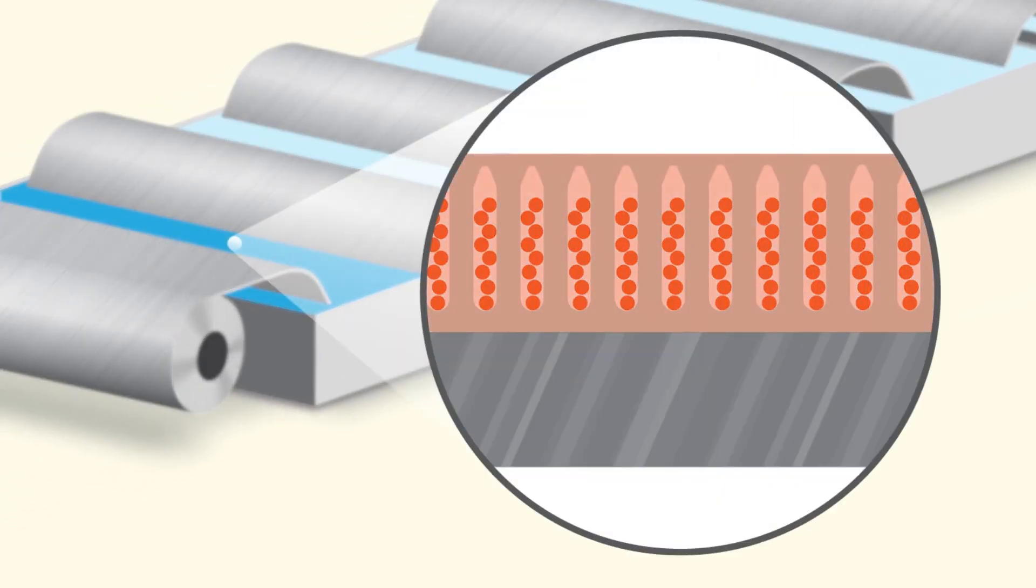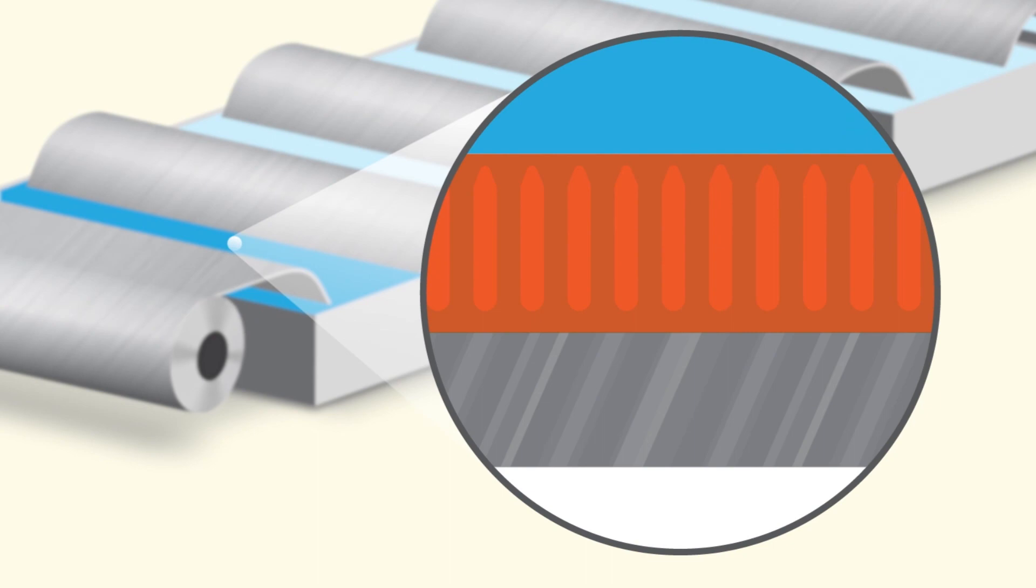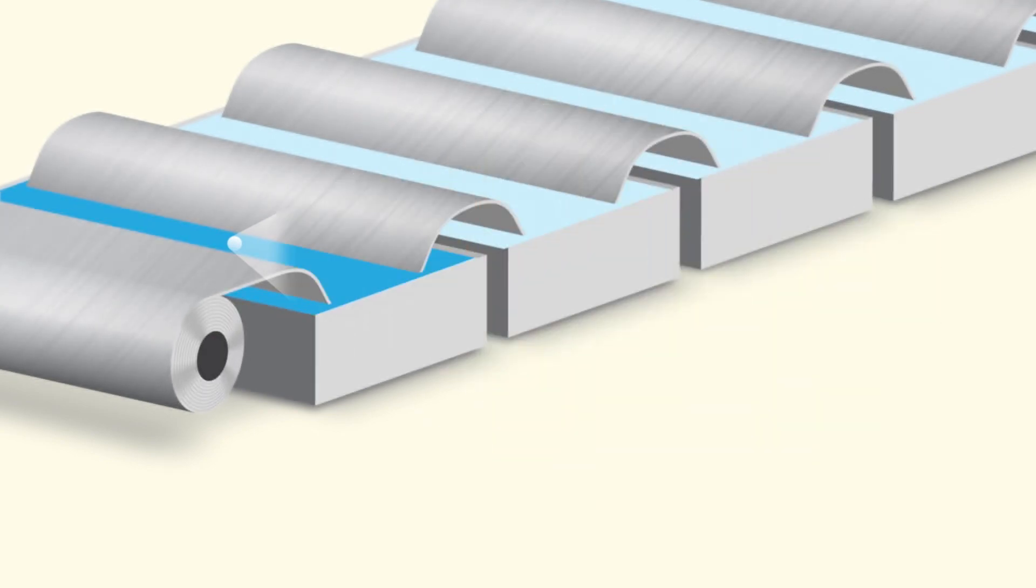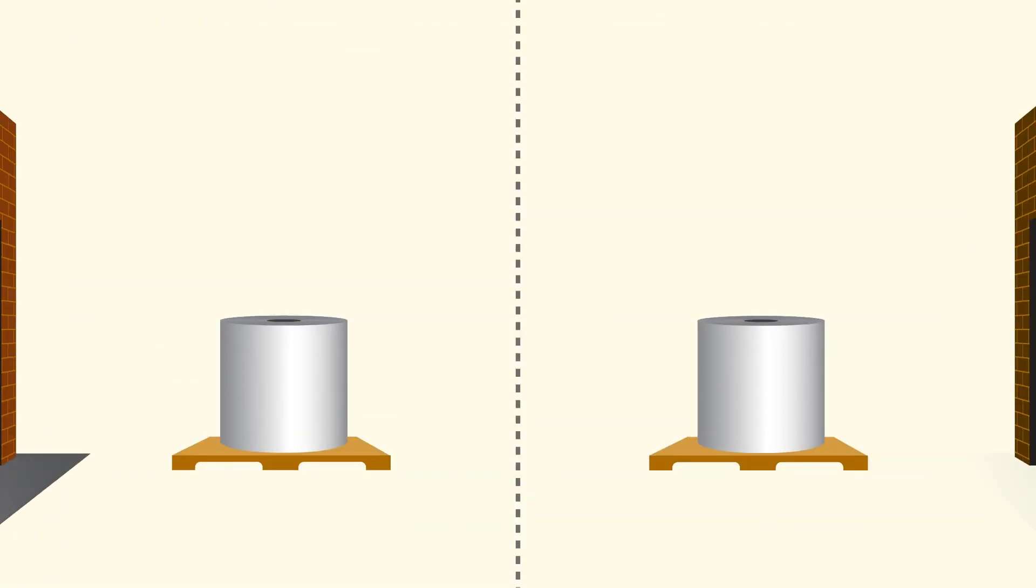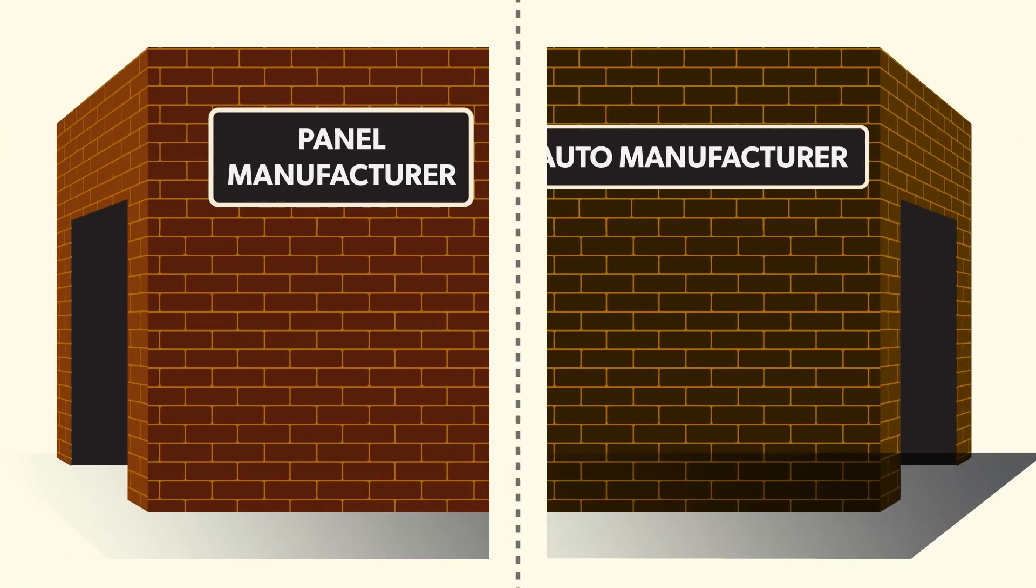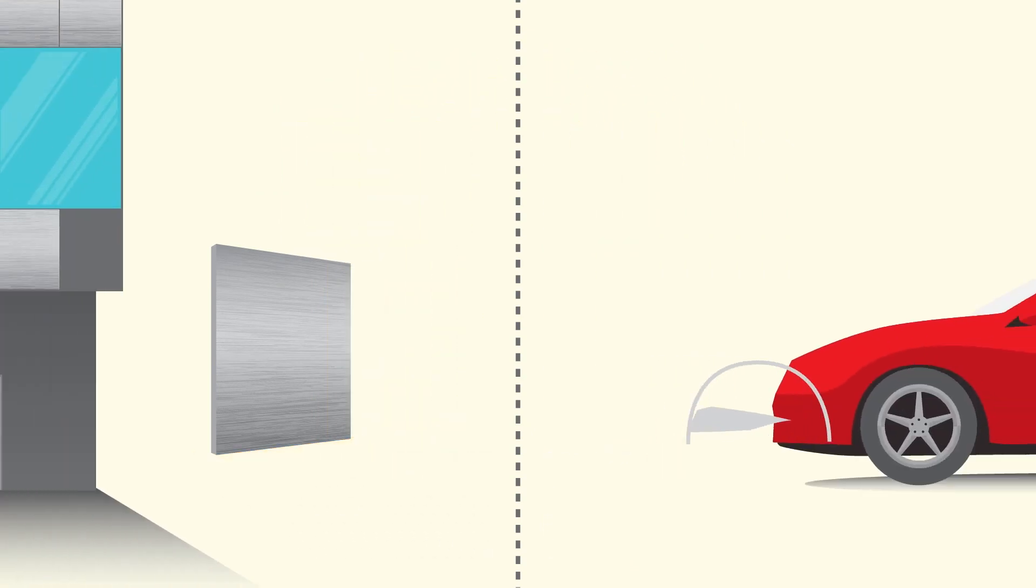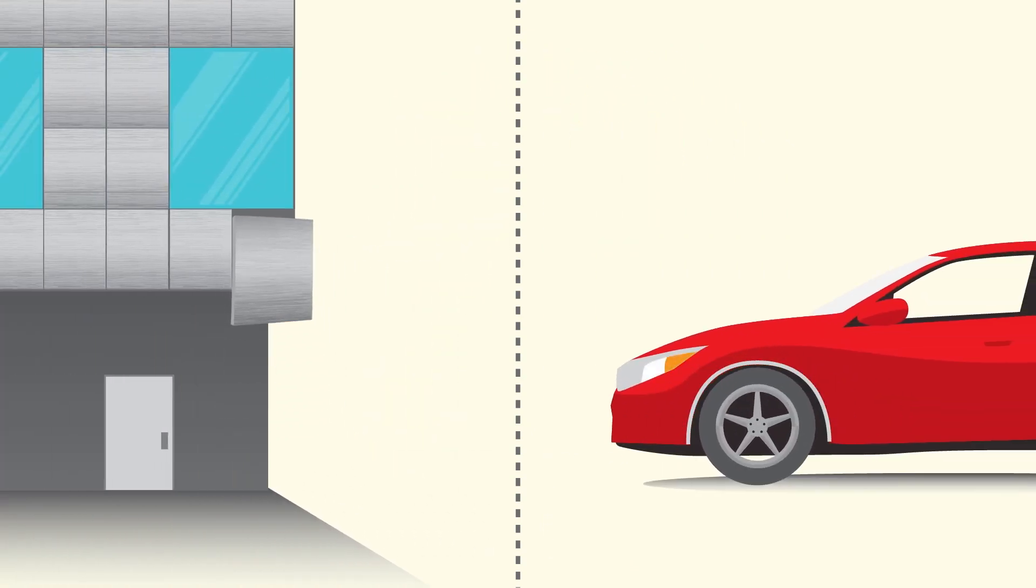Step five in the anodizing process is when the aluminum is sealed and rinsed, completing the anodizing process. From here, the finished anodized aluminum is shipped to clients who manufacture parts or panels, providing products for a multitude of markets and industries.